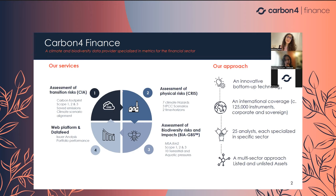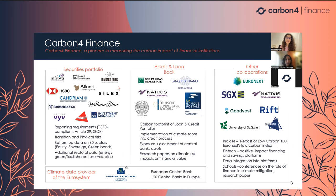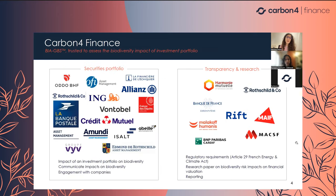We work with different types of clients: asset managers, asset owners, banks — both private and central banks. We are the official climate data provider for all euro system European central banks. We also work with index providers such as Euronext or SGX, with universities, and with transparency applications such as Rift or Goodvest. For biodiversity specifically, we help clients with our database and platform, and for Article 29 reporting we help actors such as Rothschild and Malakoff-Humanis.